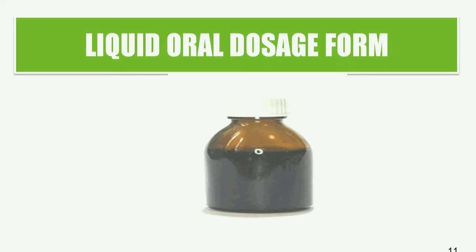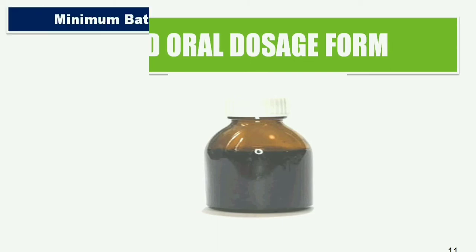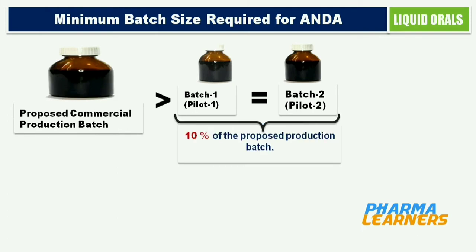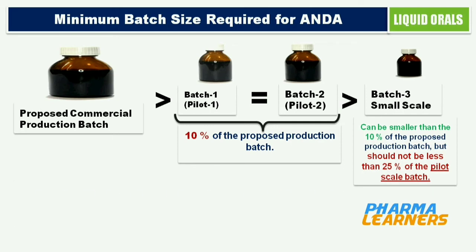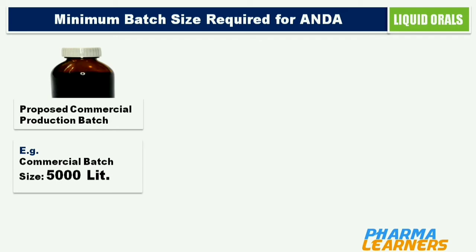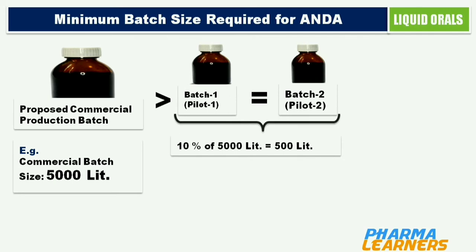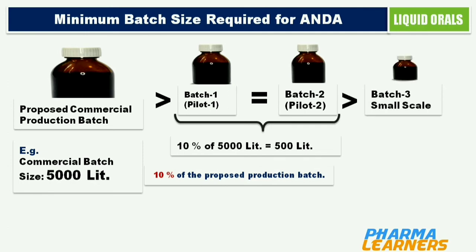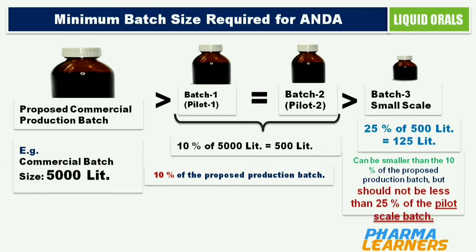Now moving on to liquid oral dosage forms. For liquid orals, conditions for exhibit batch size are similar to those of solid orals, but there is no minimum quantity requirement as with solid orals. Here, 2 out of 3 batches should be a minimum 10% of the proposed commercial batch, and the 3rd batch should not be less than 25% of the pilot batch. Also, to capture variability introduced by packaging, the product from all batches should be used in the packaging process. For example, if the proposed commercial batch size is 5,000 liters, then 10% of 5,000 liters is 500 liters, so the minimum quantity of 2 pilot batches is 500 liters each, and 25% of 500 liters is 125 liters for the 3rd batch.